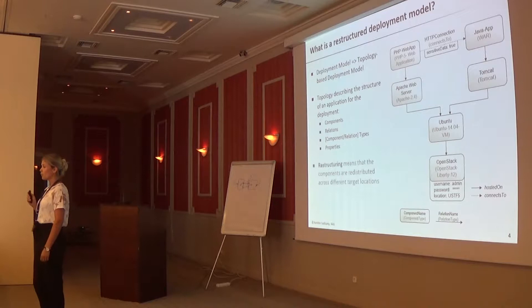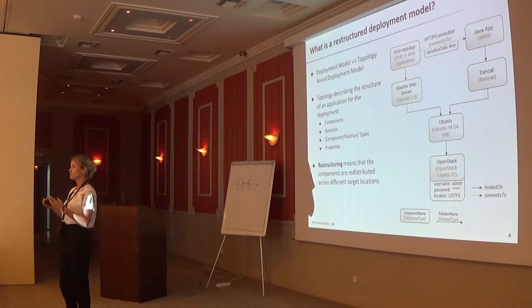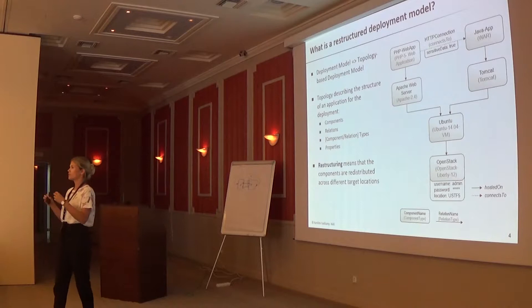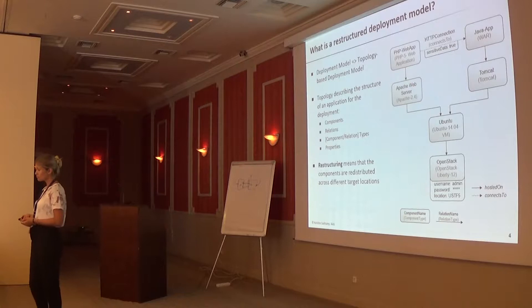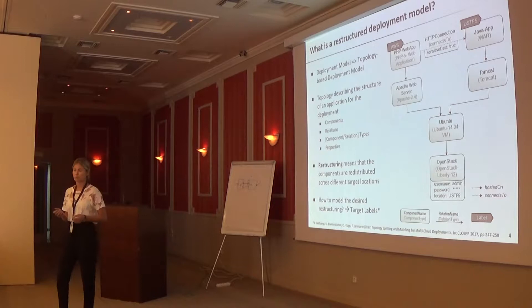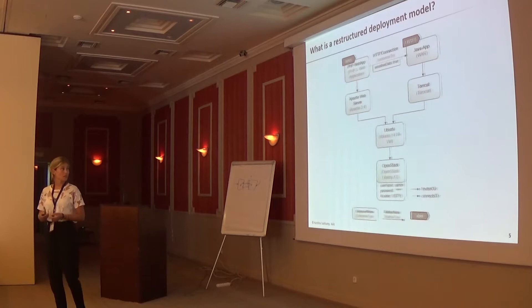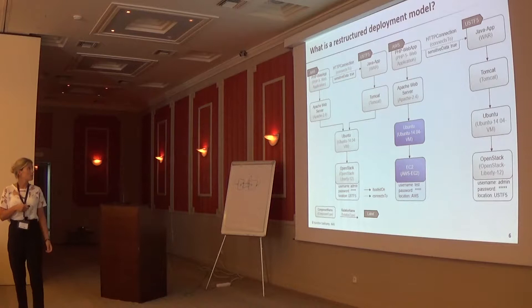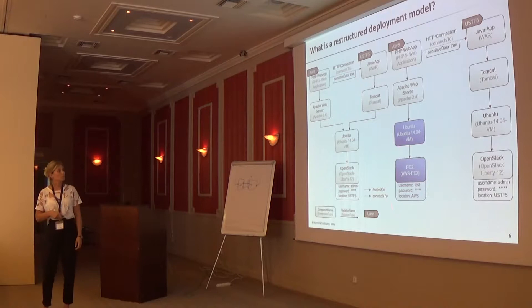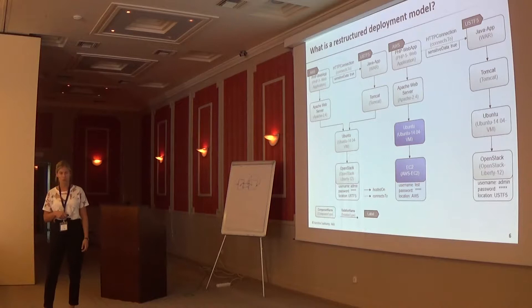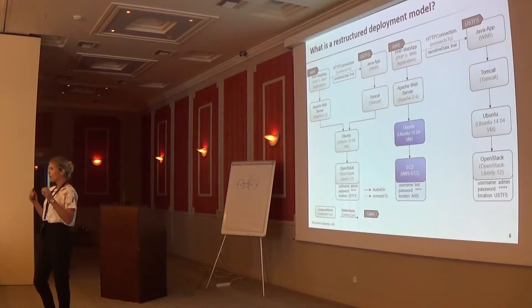So what does restructuring mean? Restructuring means that we have to redistribute our components of the application to different target locations and adapt the topology accordingly. This can be done by assigning target labels to the components. We introduced this approach last year at the CLOSER conference. With these labels we can indicate how we want to distribute the components. Here we want to move one of the applications to Amazon, so we have to adapt the topology and add new components so it's hosted on an EC2 instance.